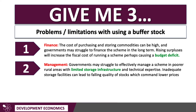The second problem is management. Buffer Stock schemes tend to target rural areas — typically poorer areas of low-income countries — which already have limited storage infrastructure, so it may not be possible to store products efficiently at low cost. Technical expertise may be absent, and poor storage facilities can lead to the quality of stocks falling, meaning a lower price when taken to market. A classic example is that refrigeration costs can be extremely high.